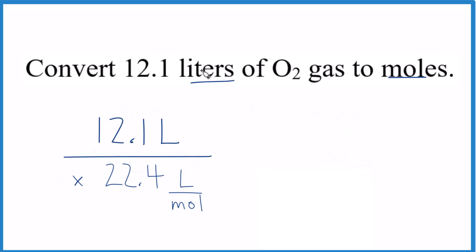So we divide our 12.1 liters by 22.4 liters per mole, and the liters will cancel out. We're going to be left with moles. So 12.1 divided by 22.4 gives us 0.54 moles, and that's it. We've converted 12.1 liters of O2 gas to moles.